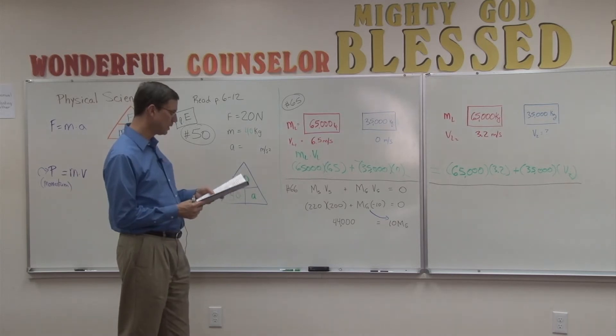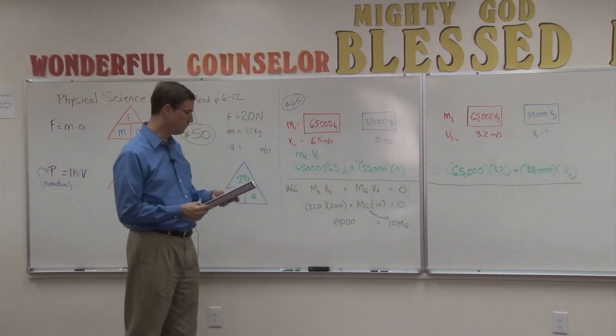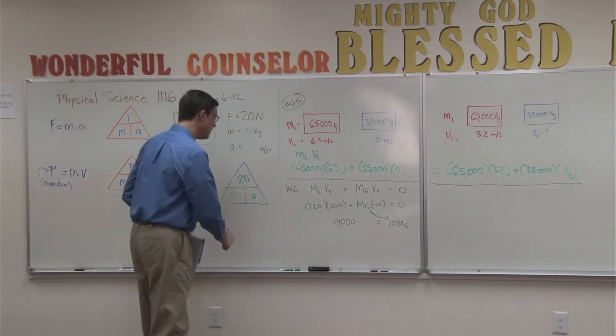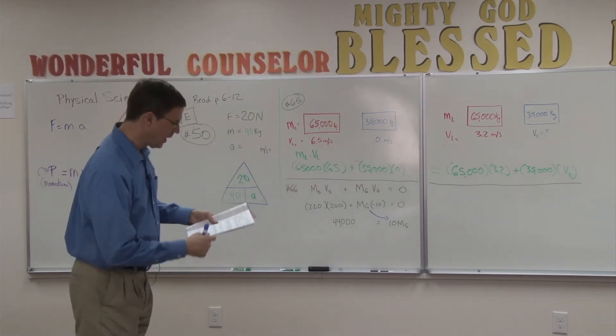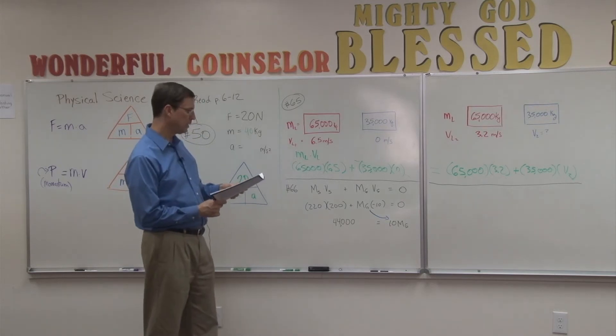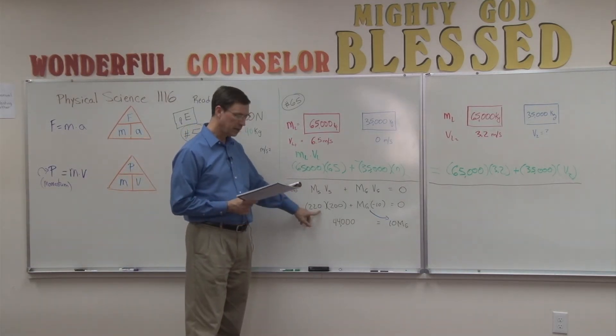Let's talk about number 66, and then you should be able to do 64 and 67 on your own. 66 talks about the mass of a gun, some artillery shell, and a gun firing it.